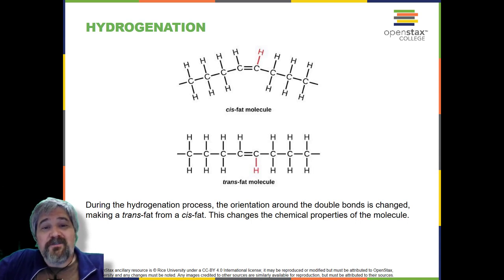The orientation of the double bonds affects the chemical properties of the fat. Margarine, some types of peanut butter, and shortening are examples of artificially hydrogenated trans fats. Recent studies have shown that an increase in trans fats in the human diet may lead to an increase in levels of low-density lipoprotein (LDL), or bad cholesterol, which in turn may lead to plaque deposition in the arteries, resulting in heart disease. Many fast food restaurants have recently eliminated the use of trans fats, and US food labels are now required to list their trans fat content.